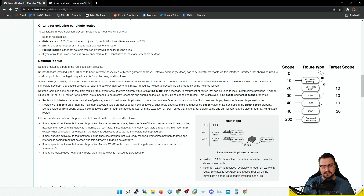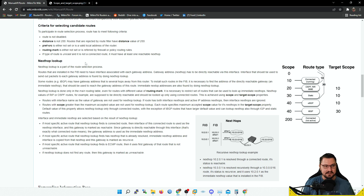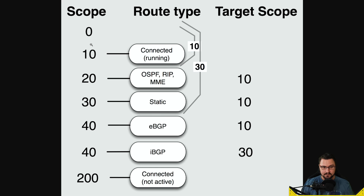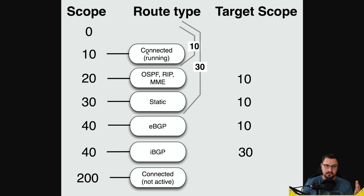This diagram from the MikroTik site shows that scope and target scope is a formula used within the RIB to figure out which routes are preferred and ultimately shown in your FIB — your forwarding information base. All connected routes have a scope of 10, and other routes have their own scope values. What we're going to do is take a route we're sending out to a next hop and change its scope so it looks like a connected route, allowing the router to use that routing information to reach a remote site.